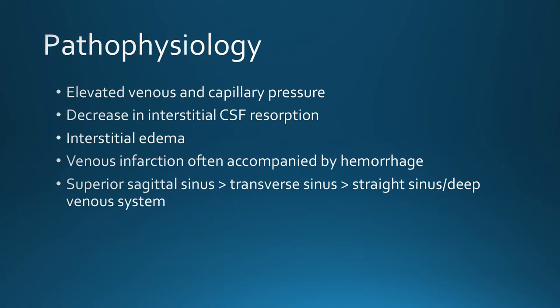Pathophysiologically, there is elevated venous and capillary pressure, causing decreased interstitial CSF resorption and resultant interstitial edema. Because of this elevated pressure, venous infarction is often accompanied by hemorrhage. Sinus thrombosis is most common in the sagittal sinus, followed by the transverse sinus, straight sinus, and deep venous system.